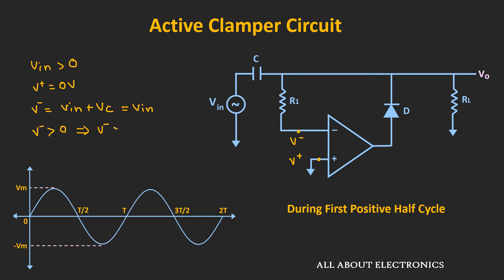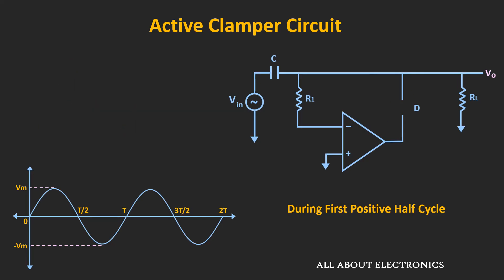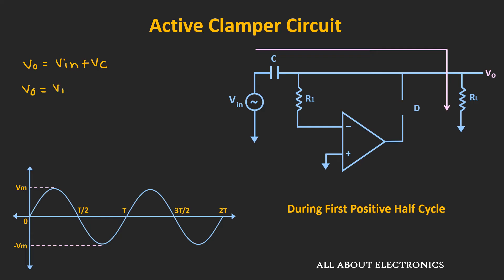Since V- is greater than V+, the op-amp will go towards negative saturation, so the output will be equal to the negative saturation voltage, and the diode will remain off. During the positive half cycle, the op-amp operates in the open-loop configuration, and the output voltage Vout equals Vin plus Vc. Since the RC time constant is very large, the capacitor will not get charged during this period — we can assume it remains uncharged. Therefore, the output voltage Vout equals Vin during the positive half cycle.